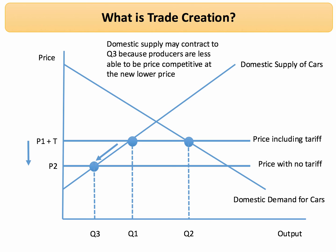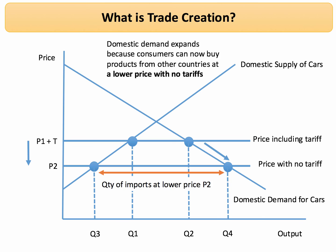So there's an issue to do with the fall in domestic output and the extent to which factors of production are mobile and can find alternative uses. However, there's a clear gain for consumers. Consumers can now buy cars from other countries at a much lower price because there's no tariff. Domestic demand expands to Q4 from Q2, and the quantity of imports at the lower price P2 is significantly increased.